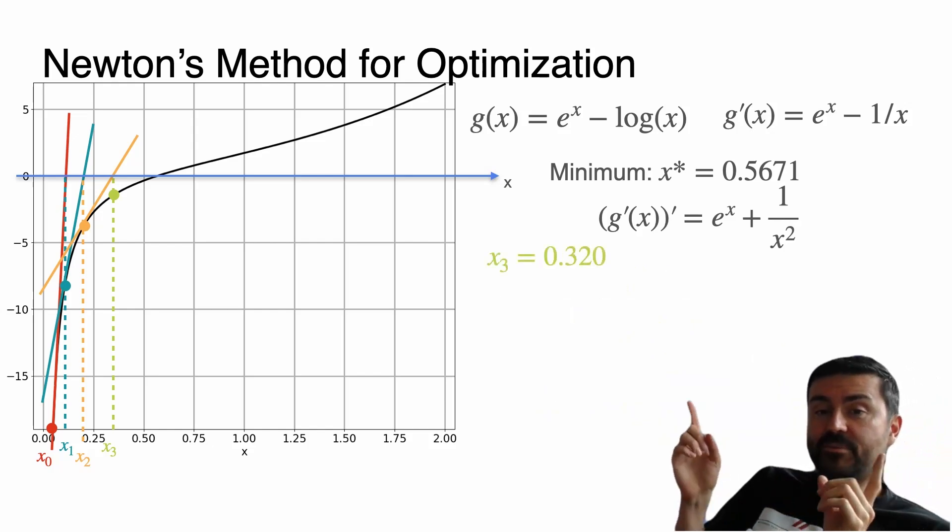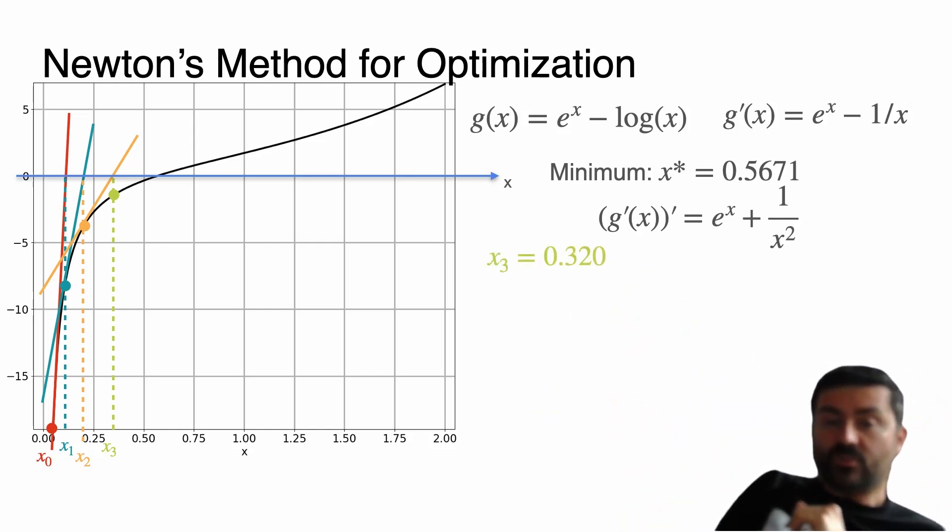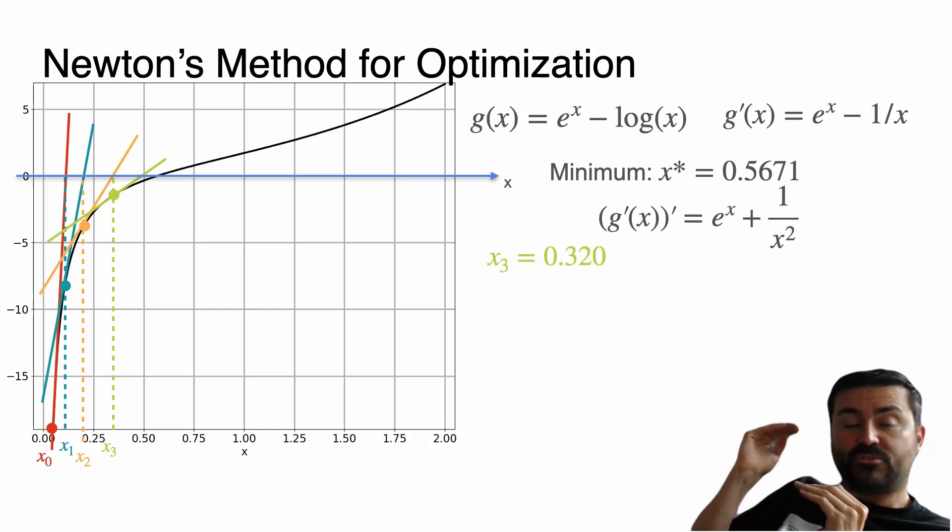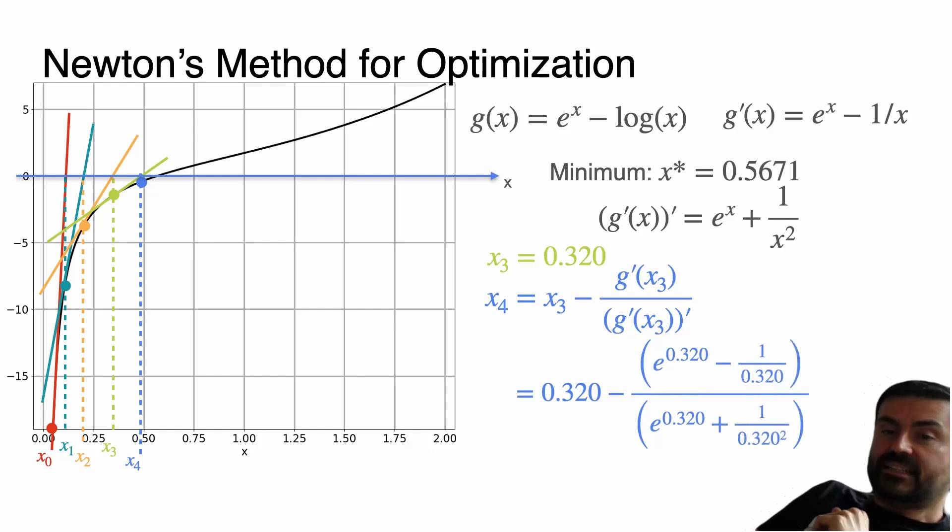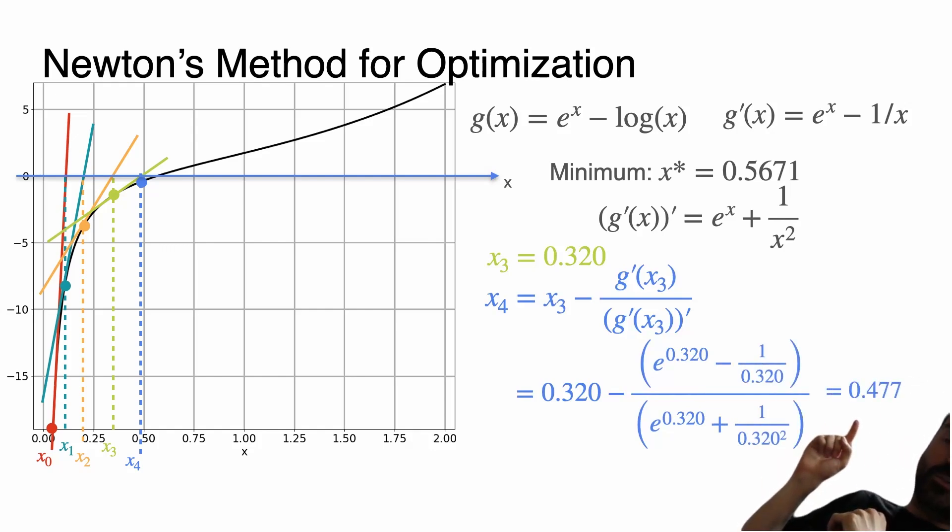Let's do it one more time. With x₃ = 0.320, we now get x₄ by drawing the tangent, seeing where it hits the horizontal axis, and then x₄ gets calculated in this exact same way and we get 0.477.